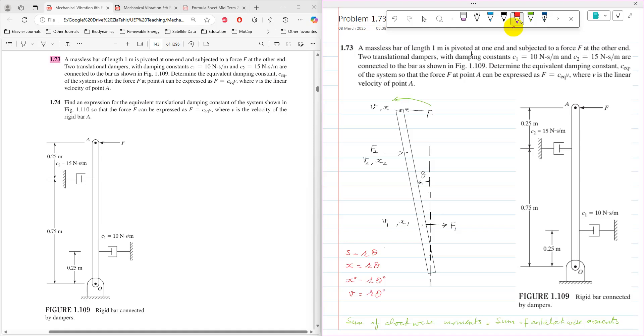R is the radius of rotation. If I consider this as the point of rotation, the radius of rotation for V1 is 0.25, for V2 is 0.75, and for V is 1.